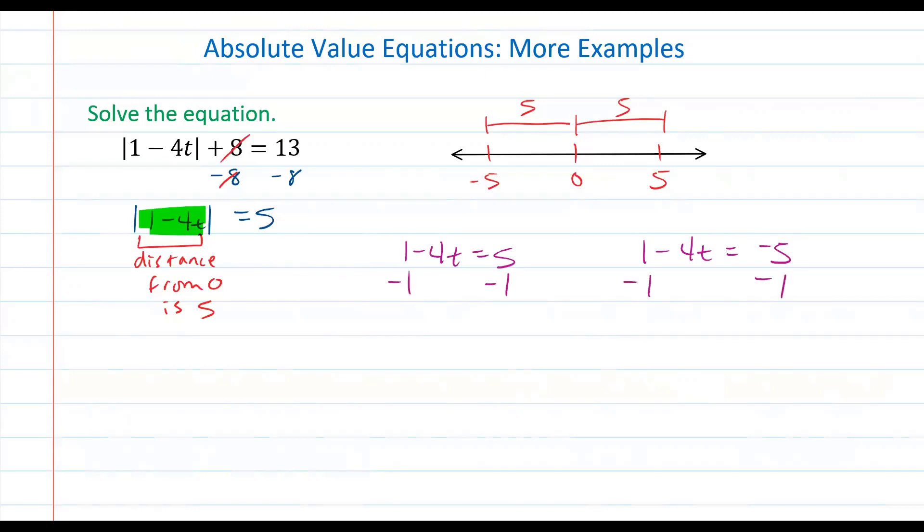We're going to subtract 1 to each side of each equation. We can really do this together because it's the same steps to solving each of these equations. What we get is negative 4t is equal to positive 4, and negative 4t is equal to negative 6. Then we go ahead and divide by negative 4.